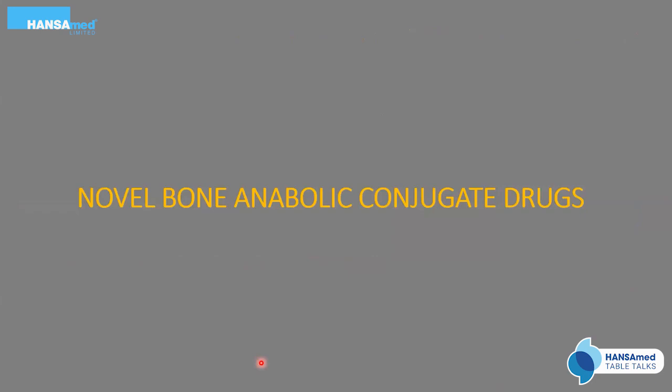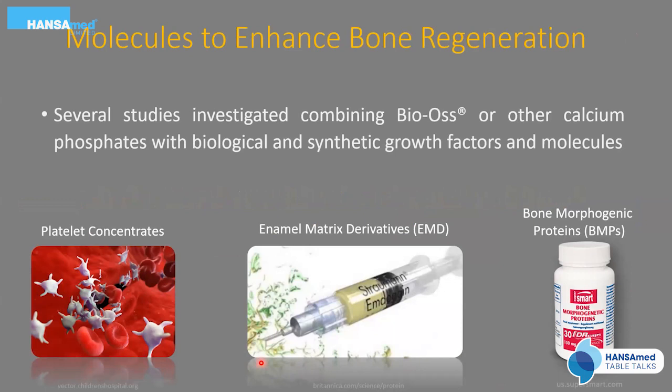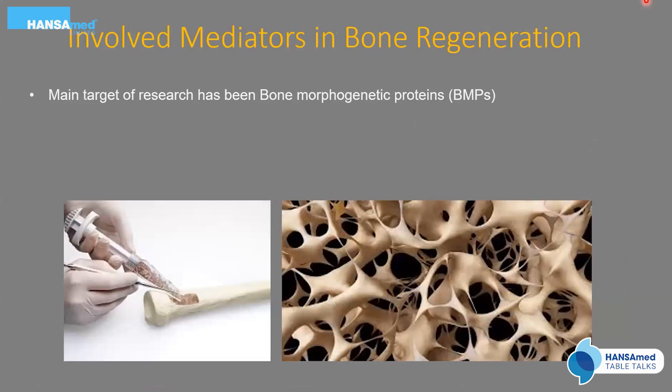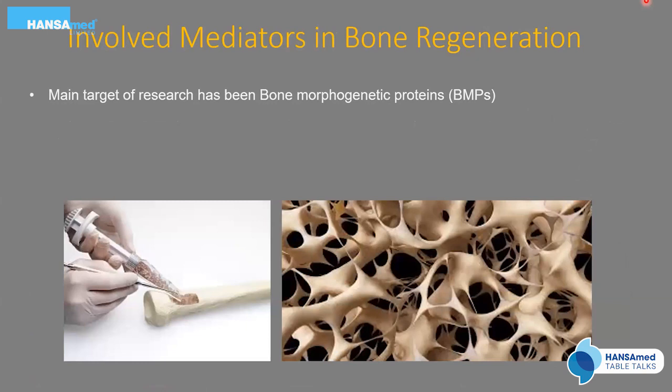Research on a variety of molecules to enhance bone regeneration has investigated combining BIOS or other calcium phosphates with biological and synthetic growth factors such as BMPs, enamel matrix derivatives (EMD), and platelet concentrates. Mediators involved in bone regeneration include parathyroid hormone, selective androgen receptor modulators (SARMs), and prostaglandin E2. There has been extensive interest in BMPs in recent years, but our focus here is on prostaglandin E2.